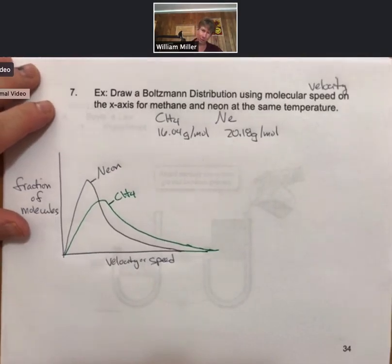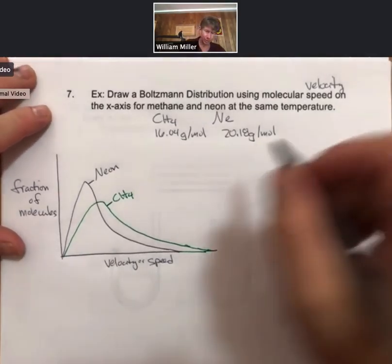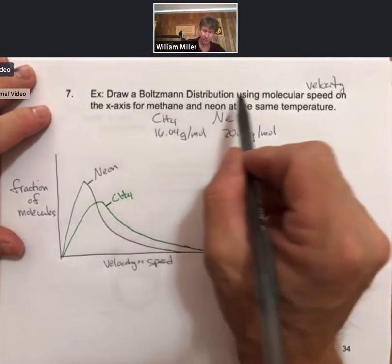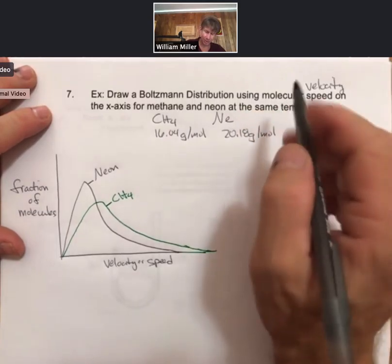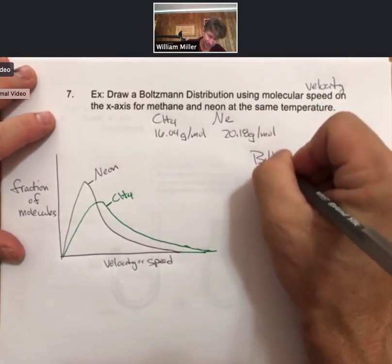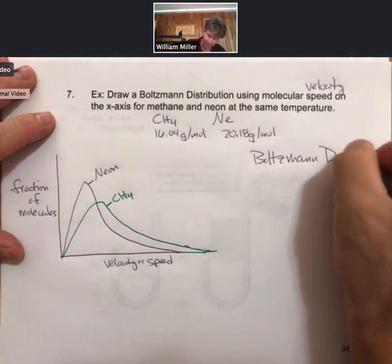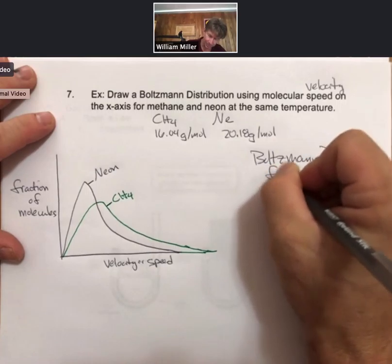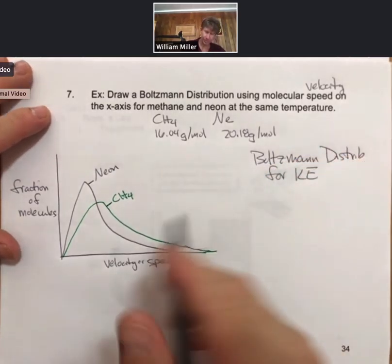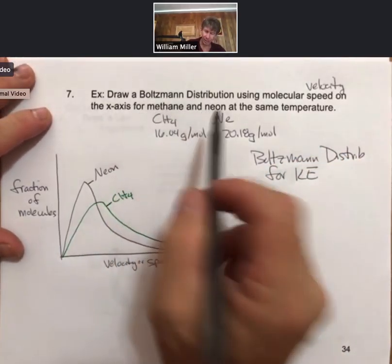Now if instead we were to ask the question, draw a Boltzmann distribution using kinetic energy on the x-axis for methane and neon at the same temperature.